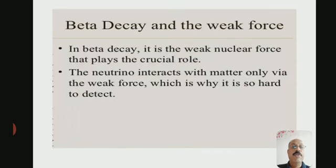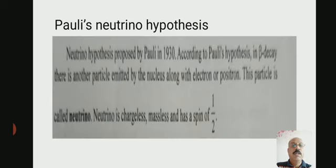In beta decay, it is the weak nuclear force that plays the crucial role. The neutrino interacts with matter only via the weak force, which is why it is so hard to detect.